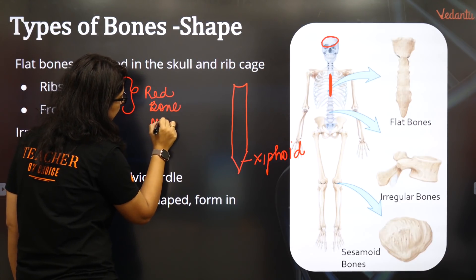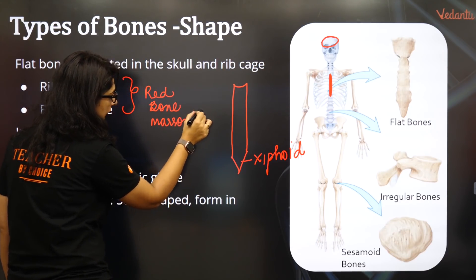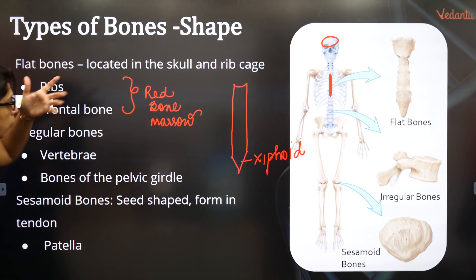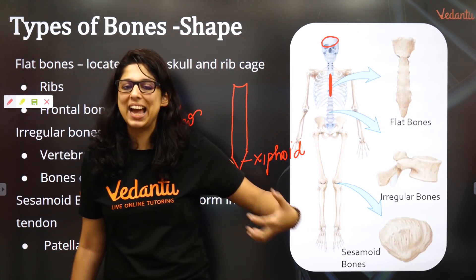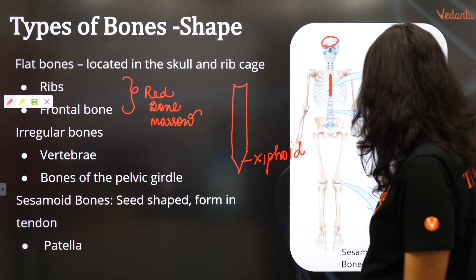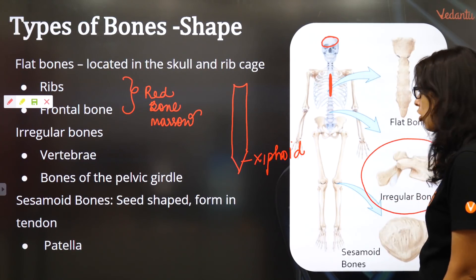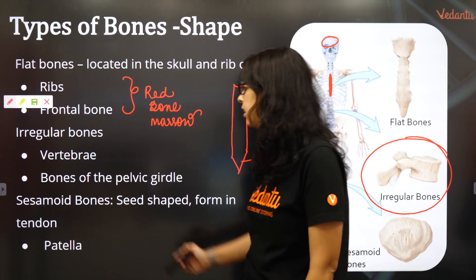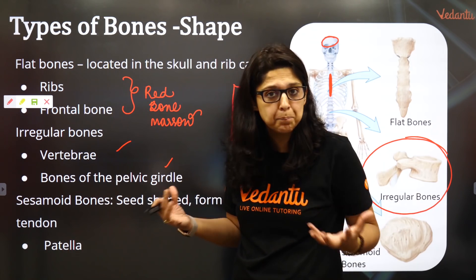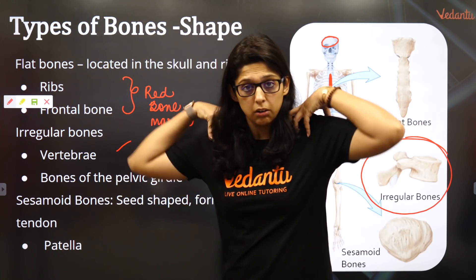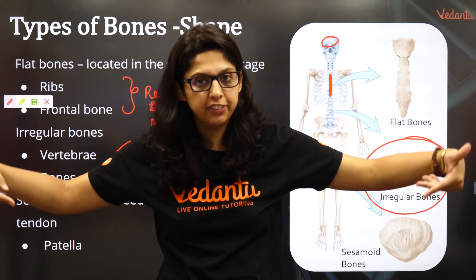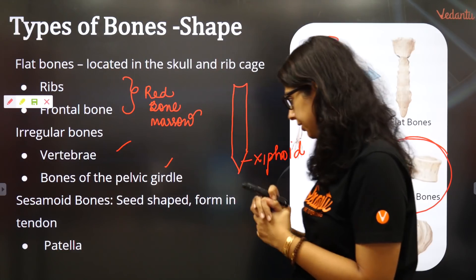So the ends of long bones and the flat bones have red bone marrow. Irregular bones are the vertebrae — atlas, axis, C6, C7. Very, very irregular bones of the vertebrae. Look at these — extremely irregular bones are the vertebrae and the pelvic girdle. The pelvic girdle is nothing but the hip. The girdle which helps birds to fly is called the pectoral girdle, and the girdle of the hip is called the pelvic girdle.